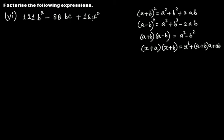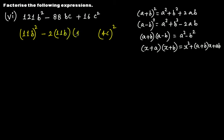For 121b² - 88bc + 16c²: write 121b² as (11b)² since 11×11 = 121, and 16c² as (4c)². Then -2·(11b)·(4c) = -88bc. This is of the form a² - 2ab + b² = (a - b)², so the factorization is (11b - 4c)².